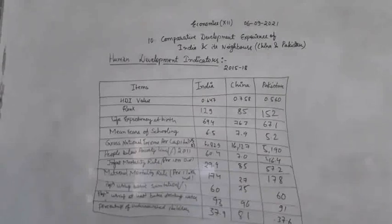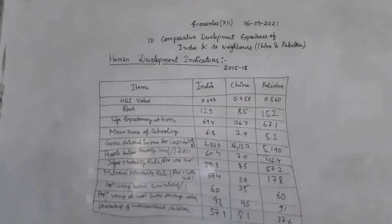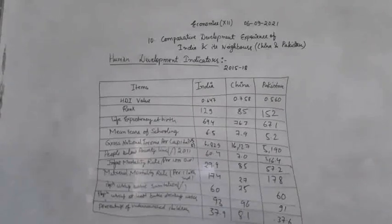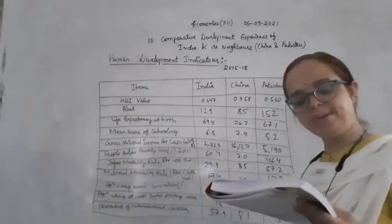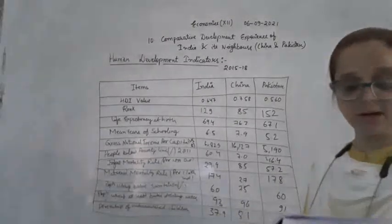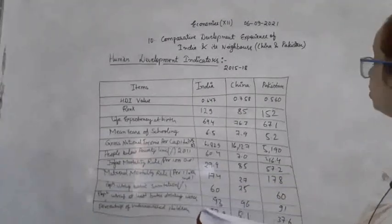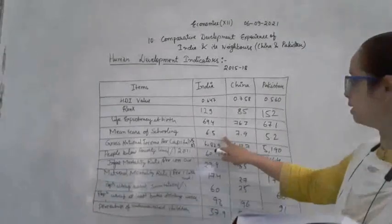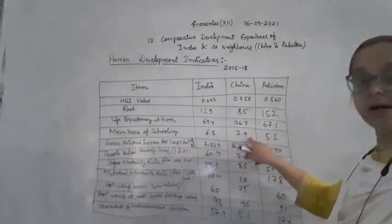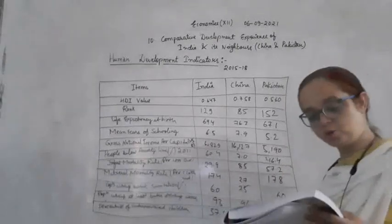Mean years of schooling is the calculation of the average number of years of education received by people, based on education attainment level of the population converted into years of schooling. This data shows India is around 6.5, China is around 7.9, and Pakistan is around 5.3.